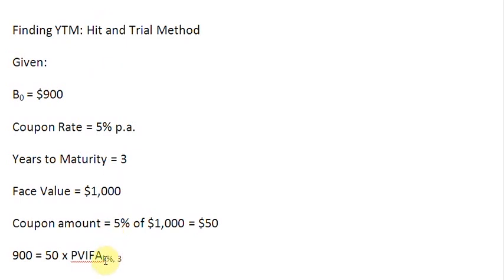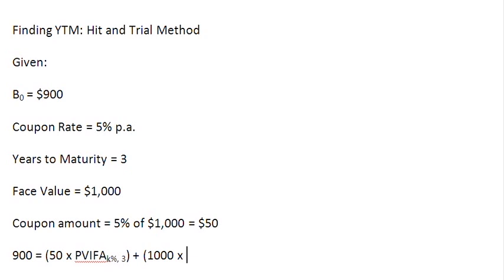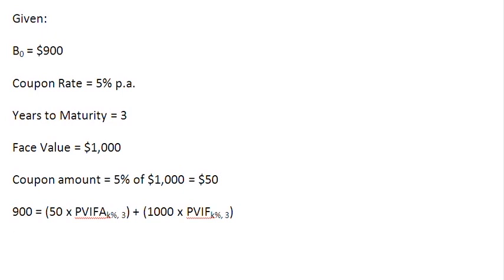We haven't put a value for K% here because that is what we are supposed to find out — when we find out K, that will be our YTM. We then add the second term: the face value of the bond, $1,000, multiplied by PVIF — the present value interest factor — at K% for 3 years. So this equation is now set up, and we have to solve for K using the hit and trial method.